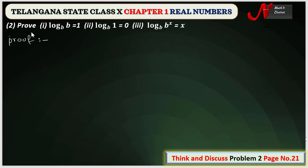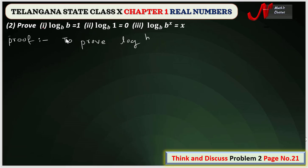Now we solve the second problem. We need to prove: log b base b is equal to one, log one base b is equal to zero, and log b power x base b is equal to x. First, we prove that log b base b is equal to one.